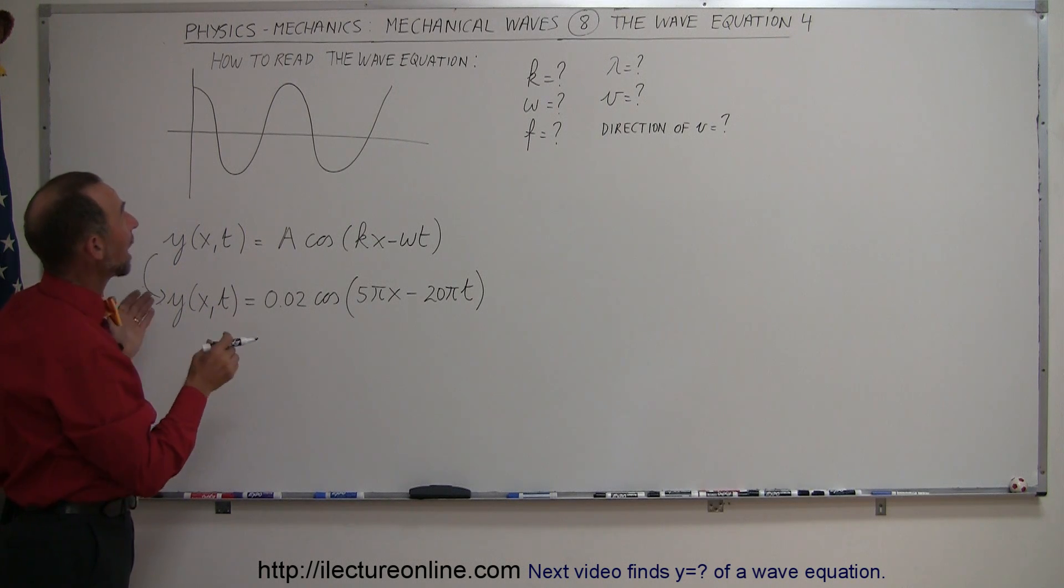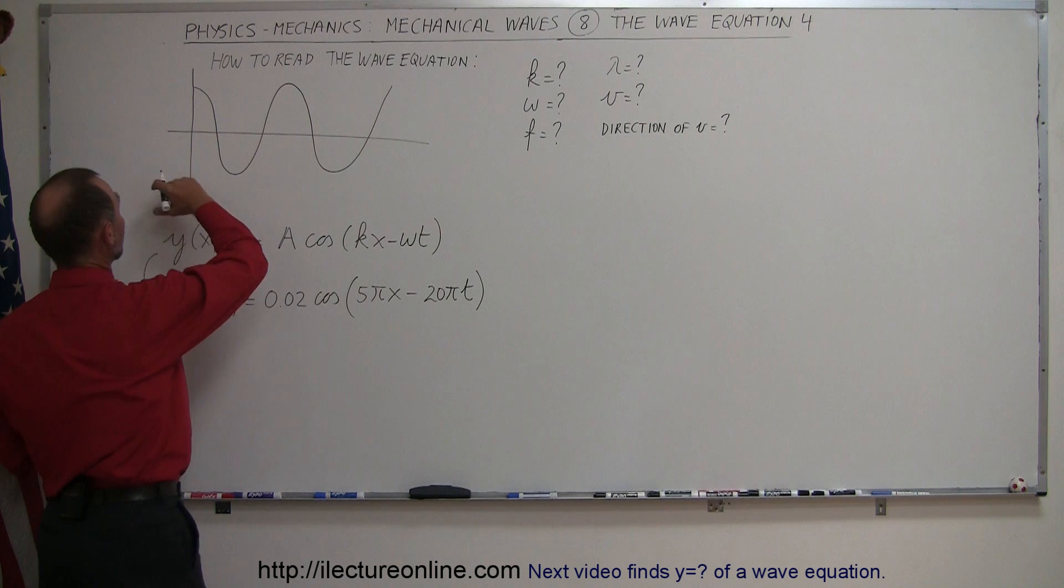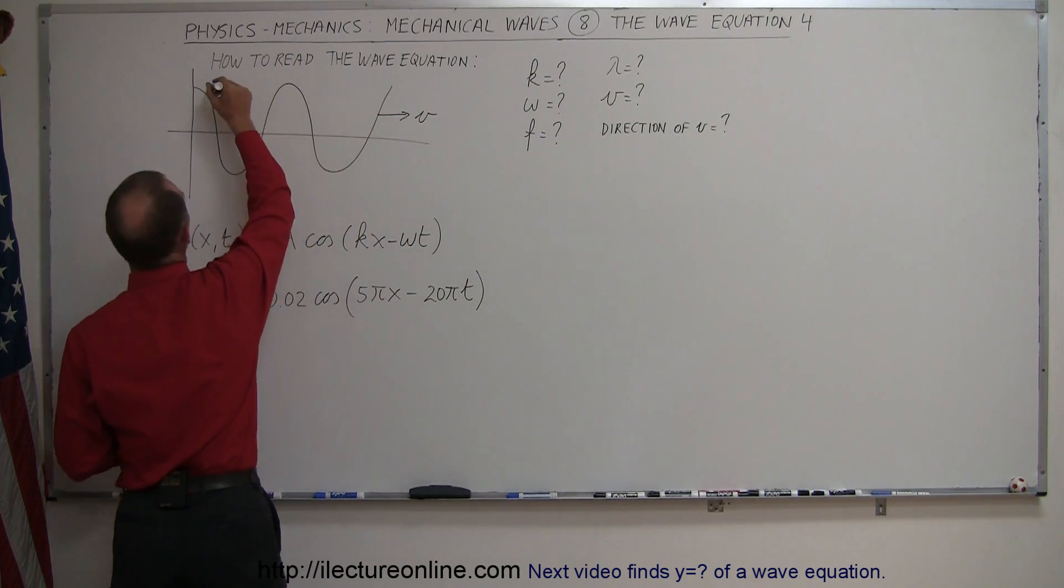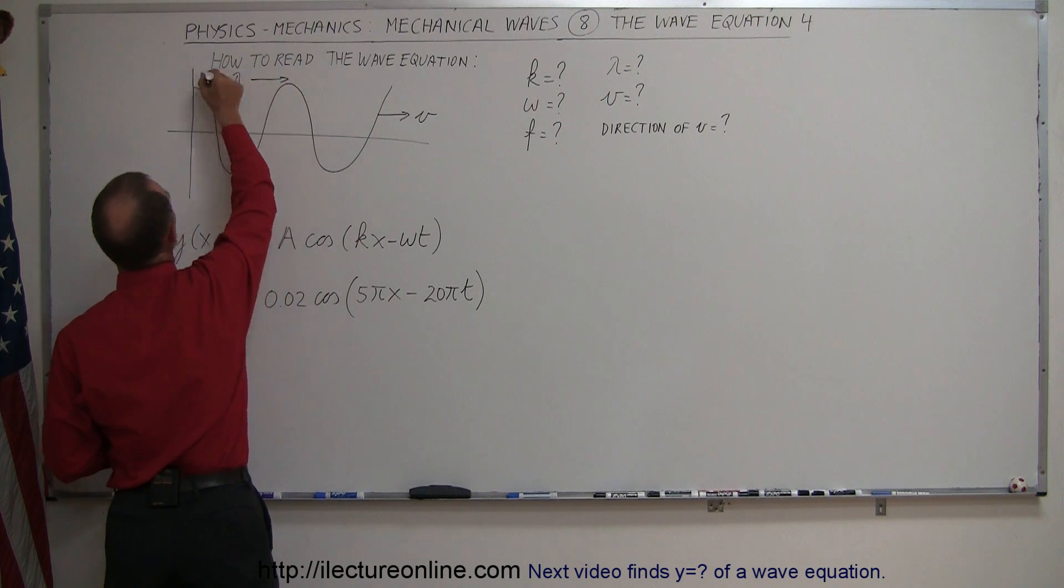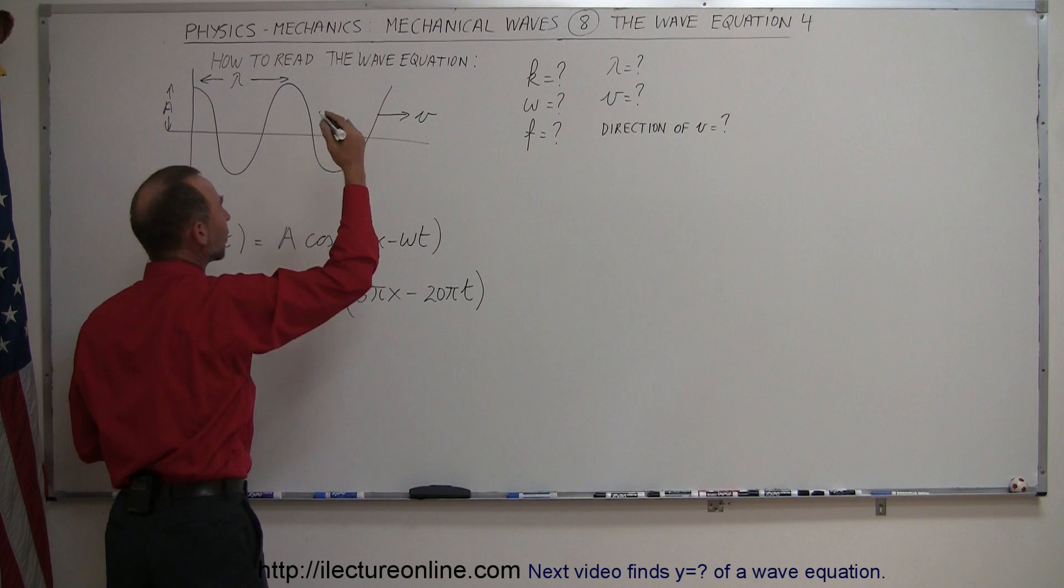In this video we're going to explain how to read the wave equation. So again, the wave equation describes a traveling wave that has a velocity v, that has a wavelength lambda, that has an amplitude A, and has a frequency of oscillation.